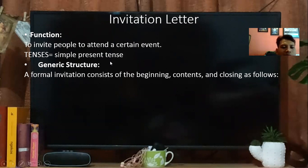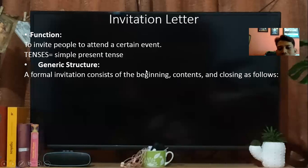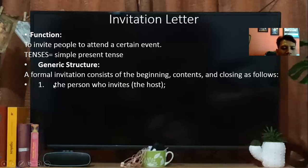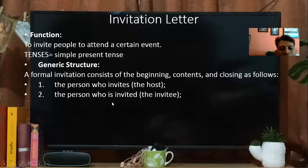Selanjutnya, general structure — elemen yang ada di dalam sebuah surat undangan. Generic structure-nya apa saja? Biasanya dalam sebuah surat formal terdiri dari beginning (pembukaan), konten (isi), dan penutup. Yang pertama harus ada the person who invites — orang yang mengundang, atau disebut dengan host, tuan rumah. Selanjutnya harus ada the person who is invited — the invitee. Invitee ini orang yang diundang, host orang yang mengundang.